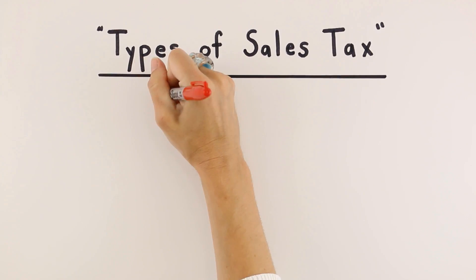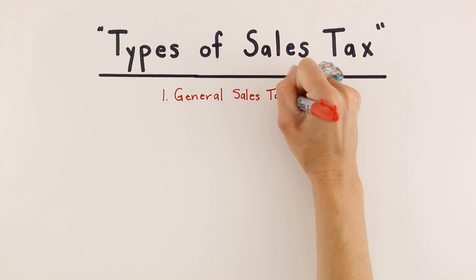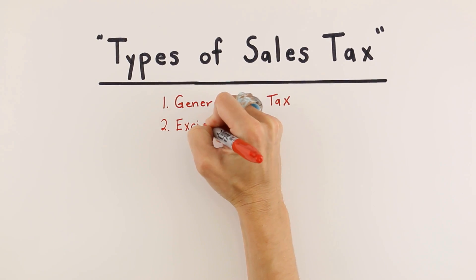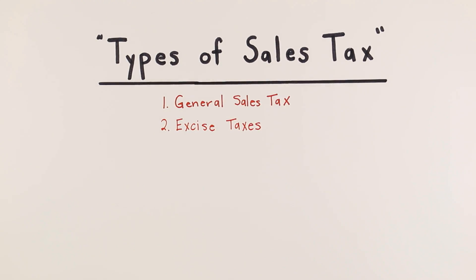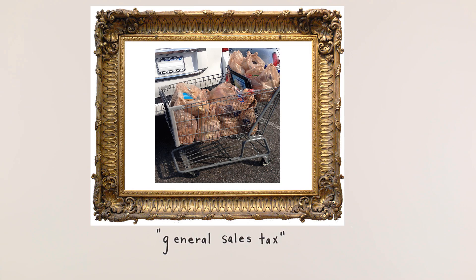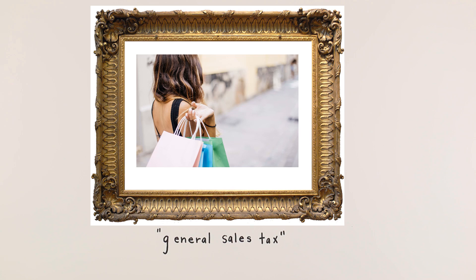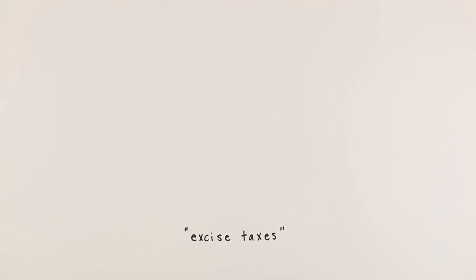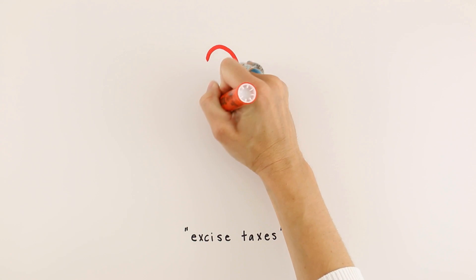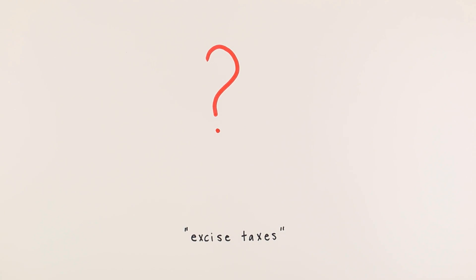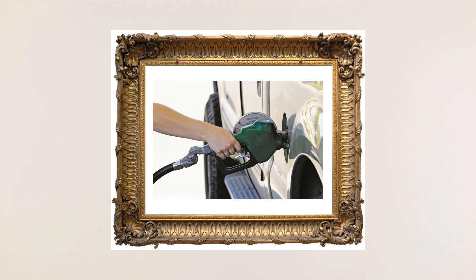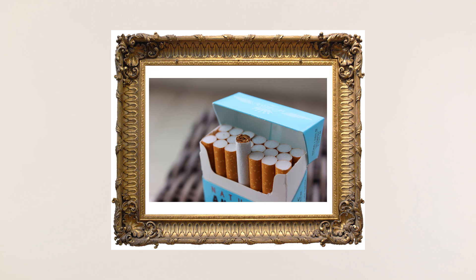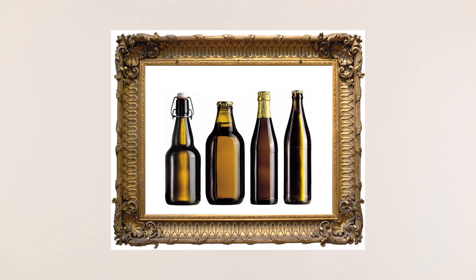There are two types of sales tax: general sales tax and excise taxes. General sales tax is a tax levied on most goods you buy. Excise taxes are taxes levied only on certain items — for example, many states have excise taxes in the form of gasoline taxes, cigarette taxes, and alcohol taxes.